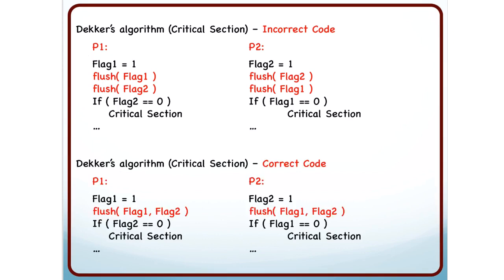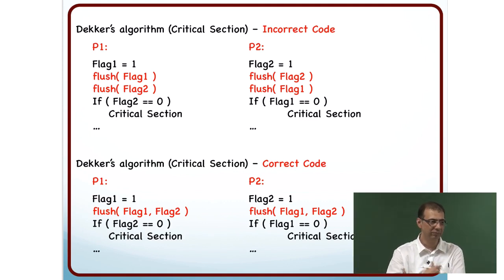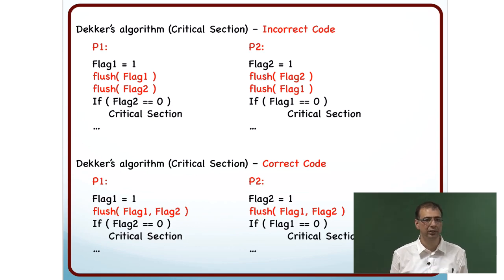The correct code uses flush flag1, flag2 together. Now the compiler cannot move both of them down because that would not maintain the order between the flush of flag2 and the if condition for flag2. You need to go back and study these examples very carefully — the more you look at it, the more you will understand why it is the way it is.